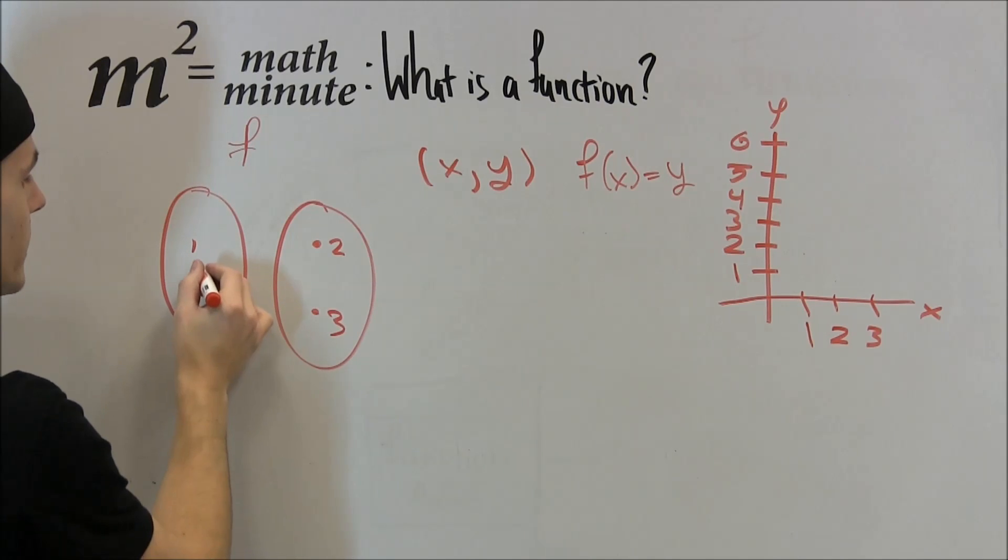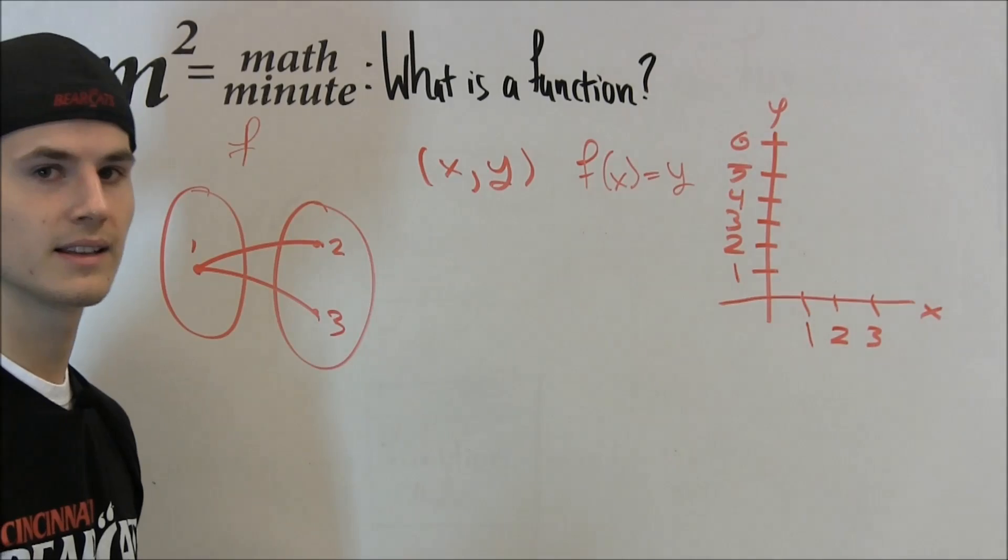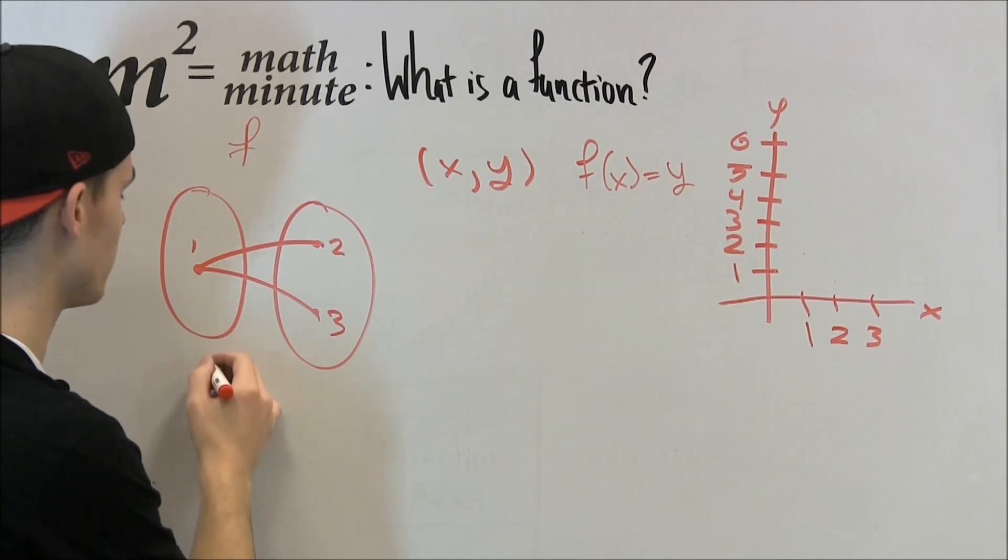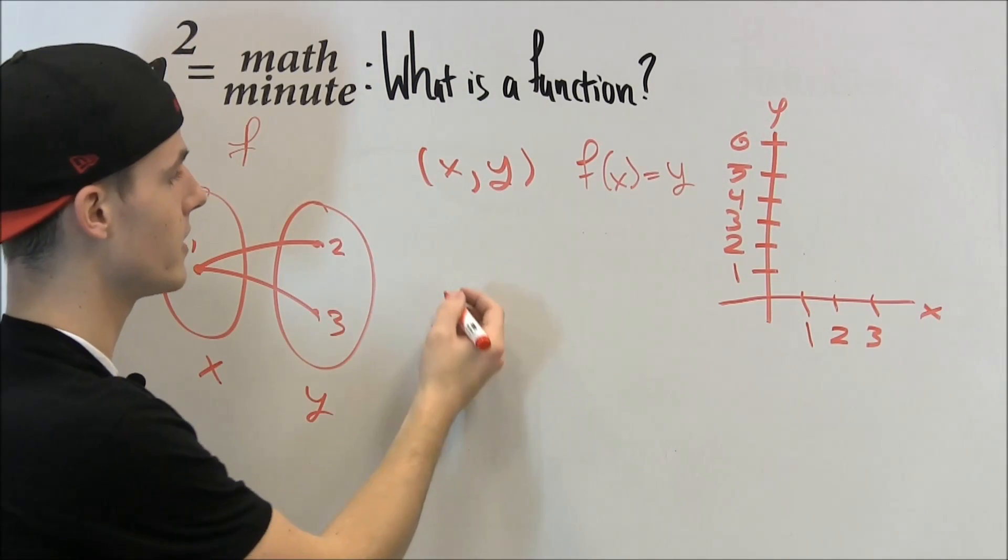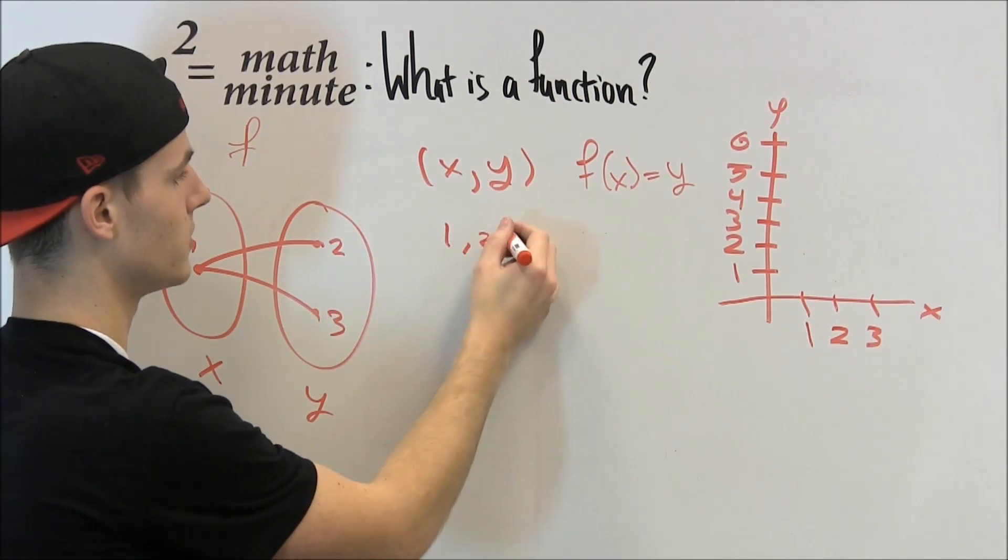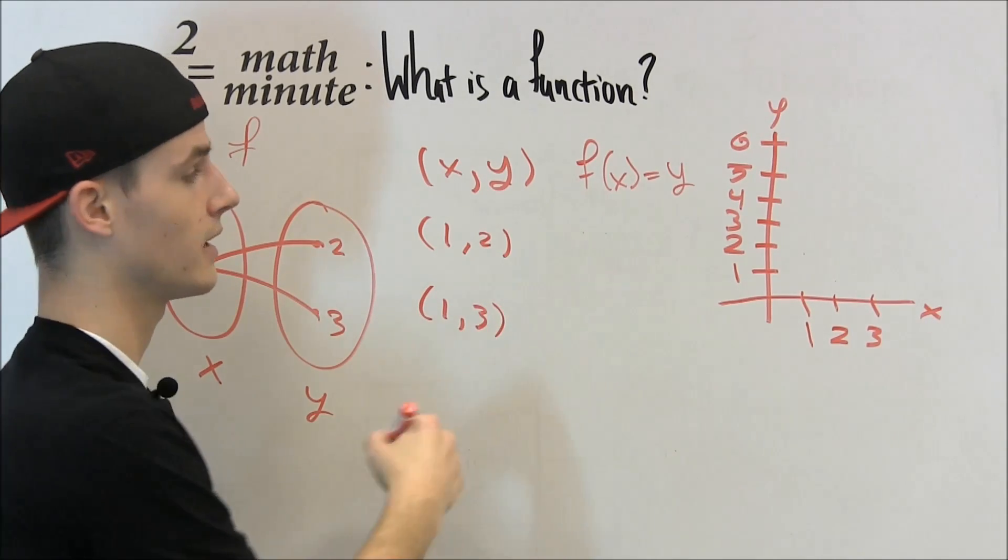And over here we have 2 and 3. So what we have is if 1 is mapped to 2 and 1 is also mapped to 3. This is where we have a problem. Once again, these are our x values and these are our y values. So over here our ordered pair is 1, 2, and we also have 1, 3. And that's a problem.